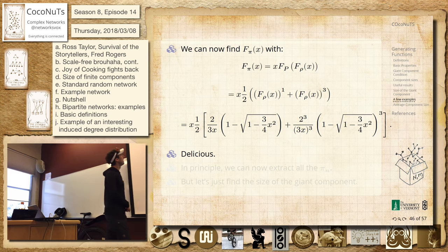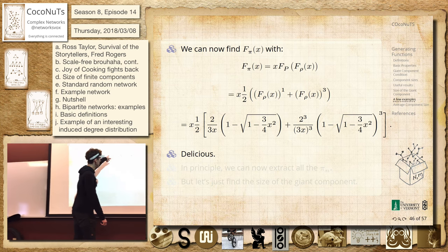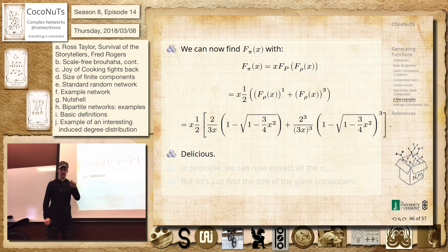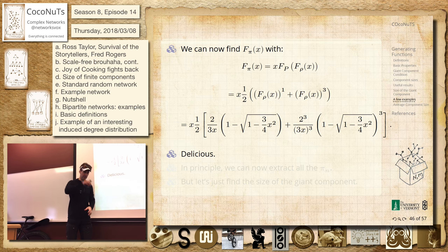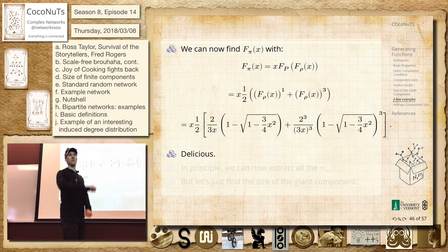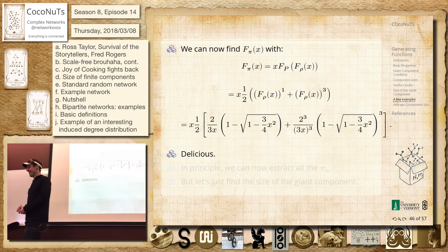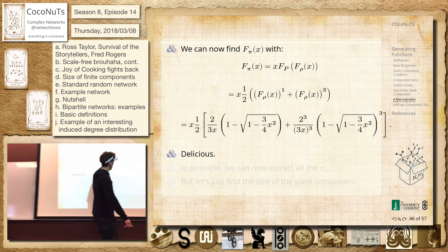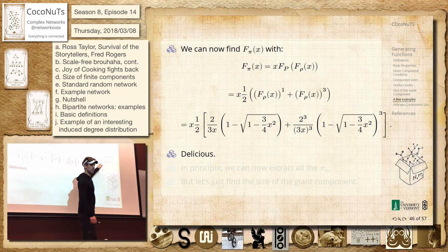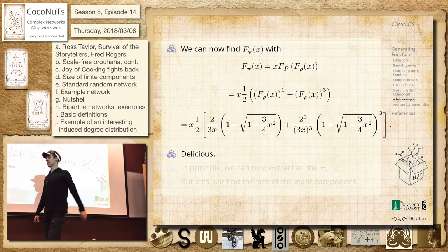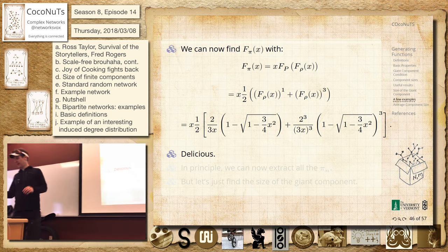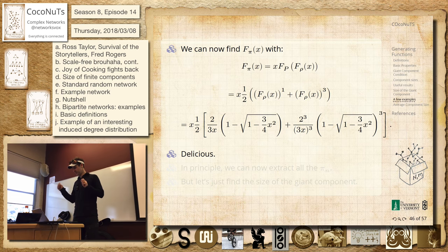This is the generating function for π. It's an exact thing. π is the probability—π_n is the probability that you randomly select a node and that is part of a component of size n. So you expand all of this and then pick off everything that's in front of an x, an x squared, an x cubed. It turns out it's only x's and x cubed and so on because there has to be odds, and they are the probabilities.